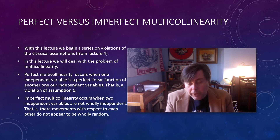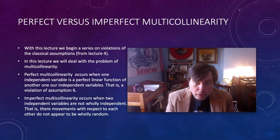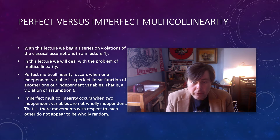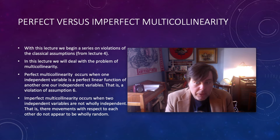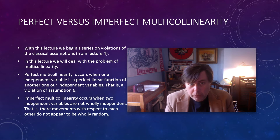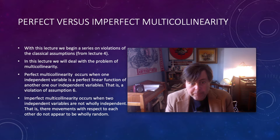Multicollinearity occurs when one or more of our independent variables can be expressed in some way as a function of each other. Within that, we have the idea of perfect or imperfect multicollinearity.